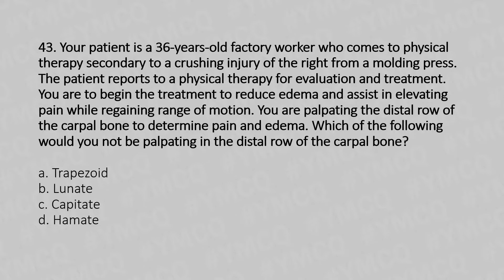Which of the following would you not be palpating in the distal row of the carpal bones? Option A: Trapezoid. Option B: Lunate. Option C: Capitate. Option D: Hamate. And the answer is Option B: Lunate.